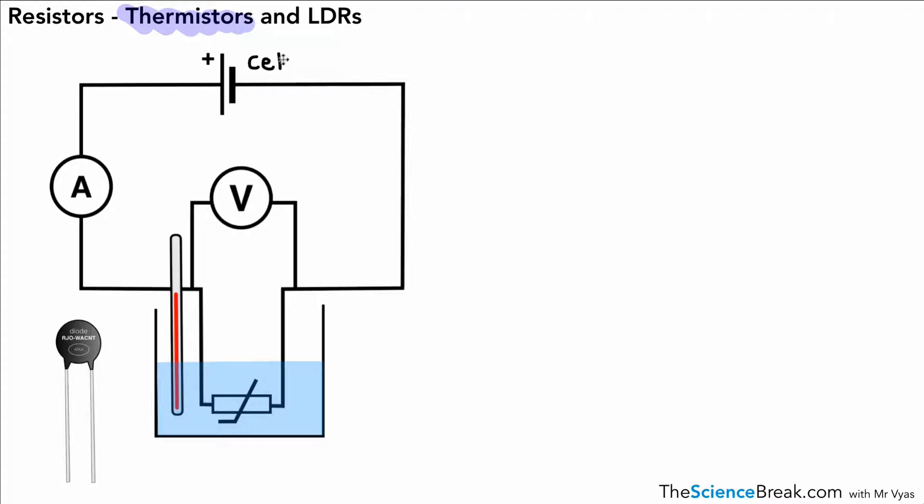Here we've got a thermistor. On the left there is a photo of what one might look like. We've got a circuit set up, and in that circuit we've got a cell, a voltmeter measuring the potential difference across our thermistor.